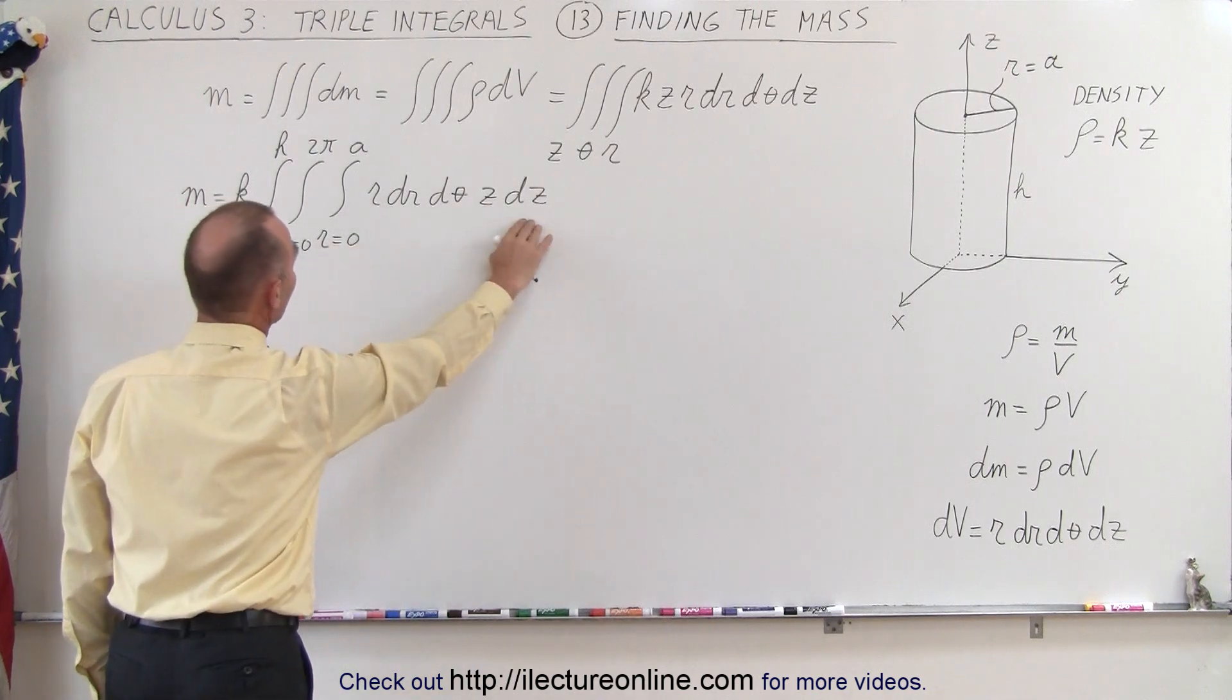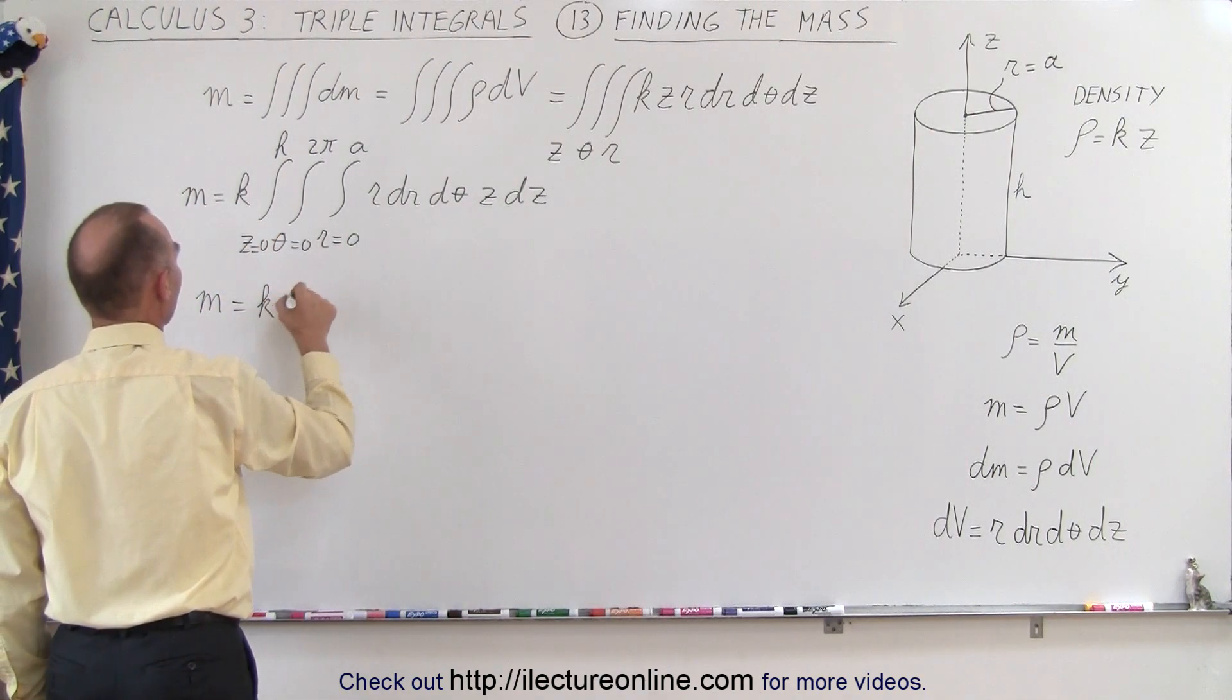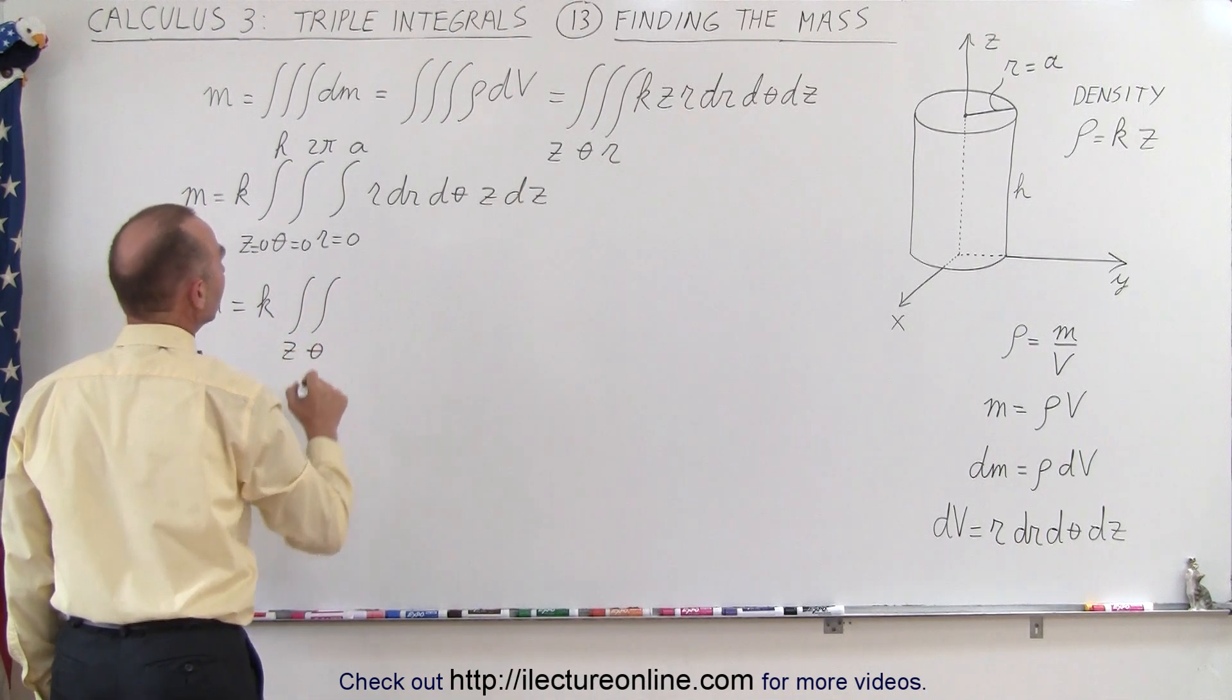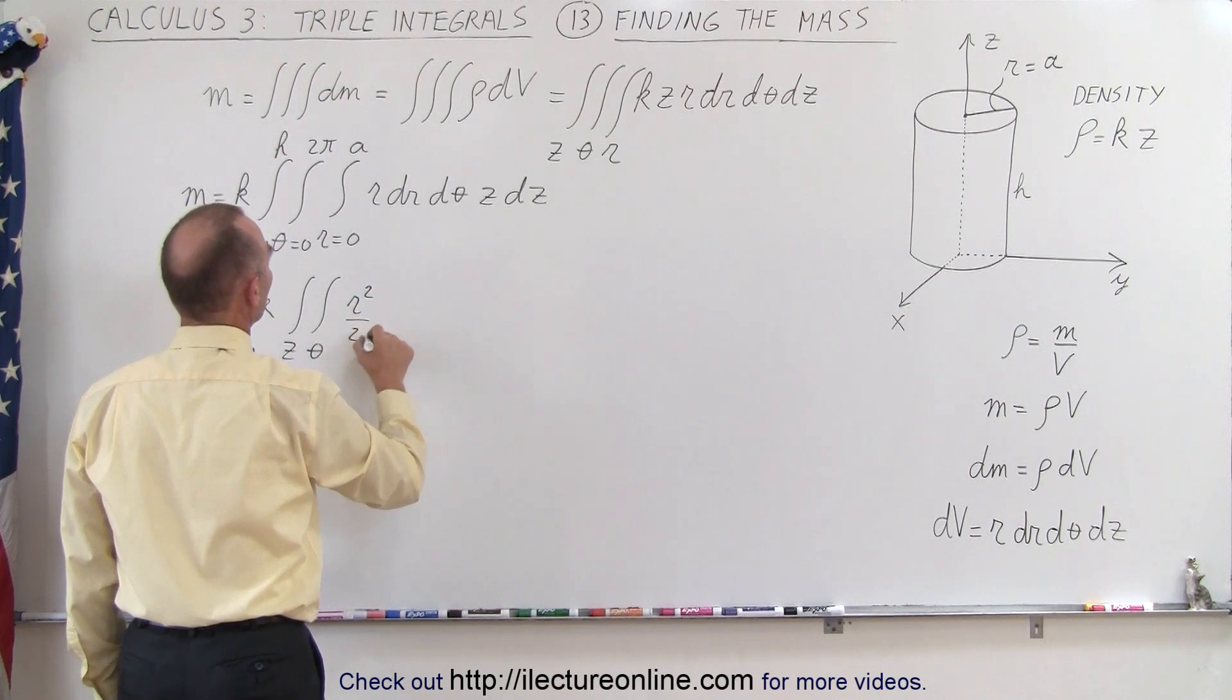Starting with r dr, everything else stays constant. The mass equals k times we still have the other two integrals over z and θ, and then r dr becomes r squared over 2 evaluated from 0 to a.